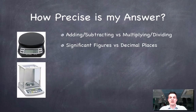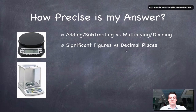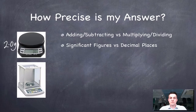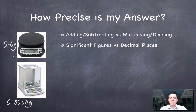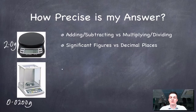Now let's look at how precise our calculated answer can be based on the data used. Let's say I used two different balances: one told me an object weighed 2.0 grams (one decimal place), and another told me a second object weighed 0.0200 grams (four decimal places). What happens if I want to find the sum of these two masses?